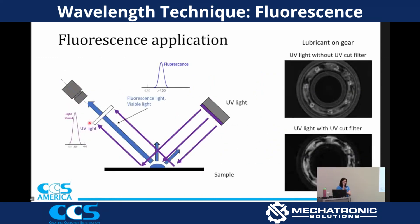I've cut out everything 400 nanometers or less — I don't care about it, I don't want to see it. 365 nanometers, don't get to my camera. 400 and above, you're welcome. So we can cut off that UV light and we only see the fluorescence. We're removing the reflection off of that metal and now we're only looking at the fluorescence of the lubricant on the gear. We're getting a much higher contrast image by just adding a UV cut filter.